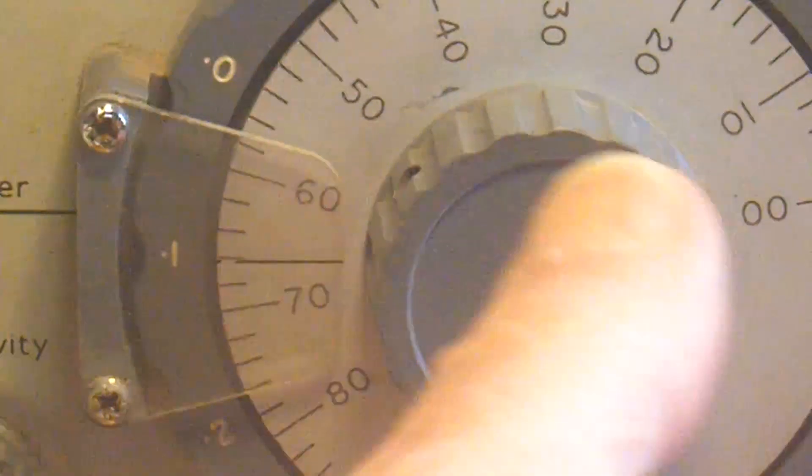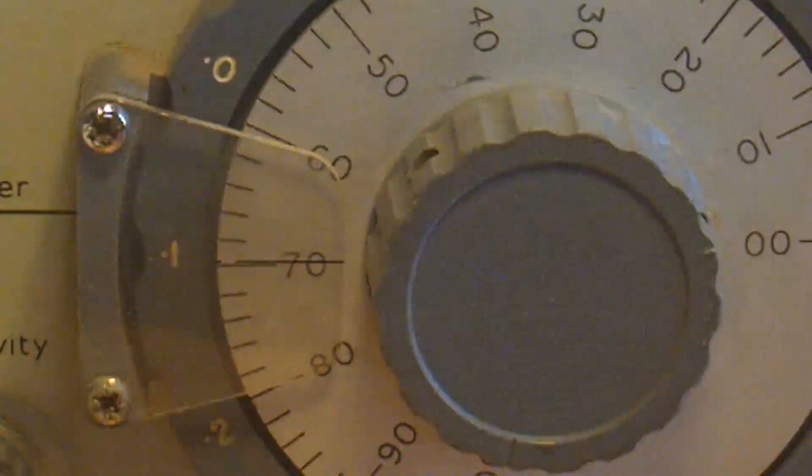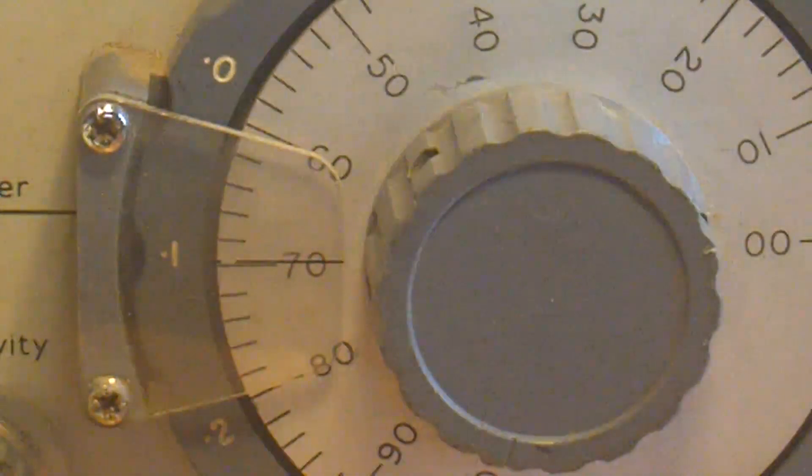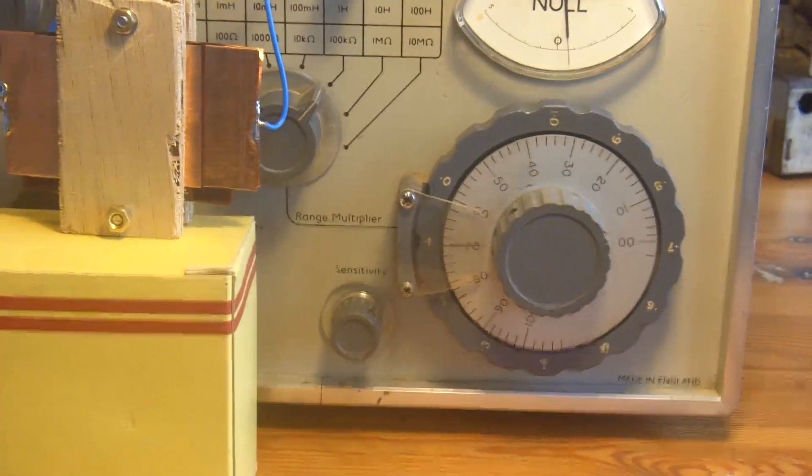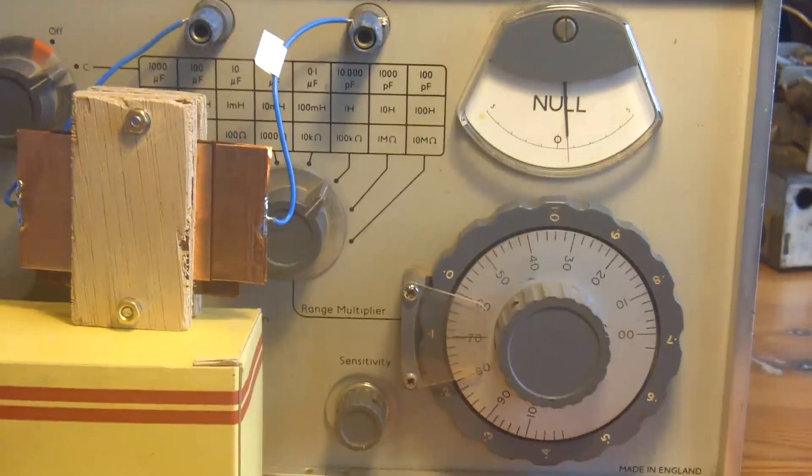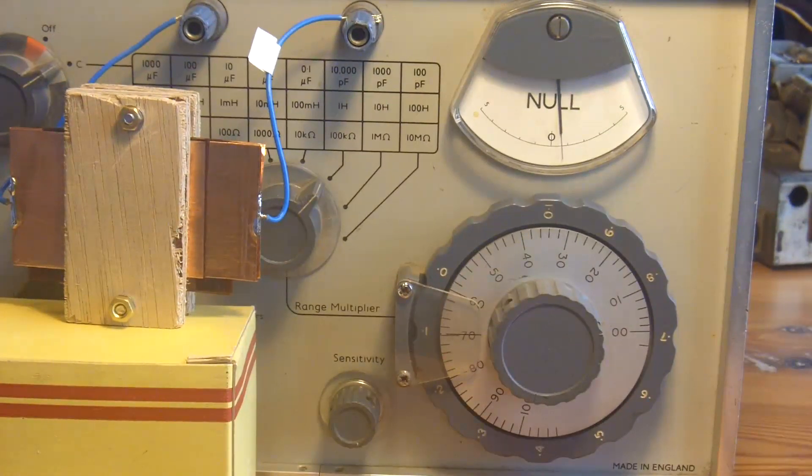Which I was expecting it to be about there, 1,700 pF, because that would have been half of its previous value. So there's proof, if you needed it, that doubling the thickness of the insulation halves the capacitance. So as I say, probably telling you what you already know, but that's a factual demonstration.